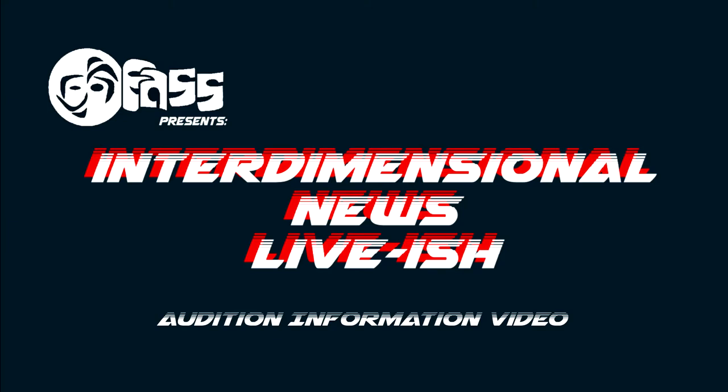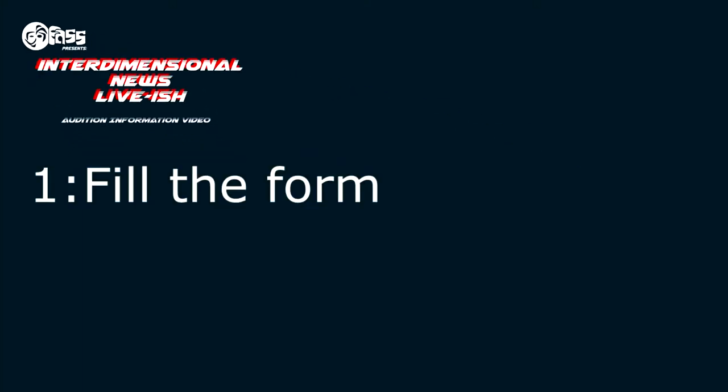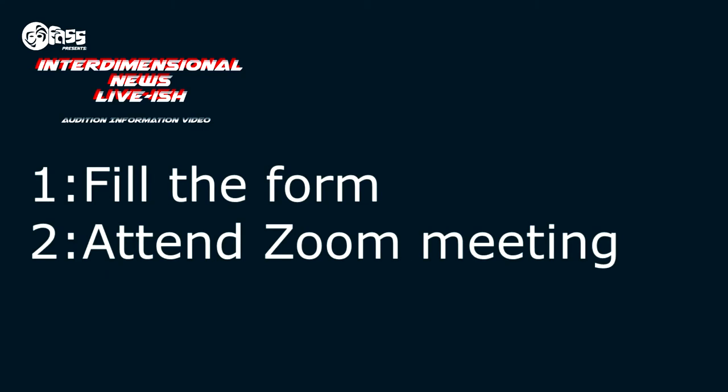The virtual audition process is a three-step process for actors and a two-step process for tech and band. The first step is optional to do ahead of time. Step 1: fill in the audition form. The link for this form can be found on all of our social media and in the description of this video. Step 2: go to the Zoom meeting on either of the audition nights. We have a Zoom meeting set for both Tuesday the 5th and Wednesday the 6th from 7–10pm. Links to the Facebook events will be in the description.